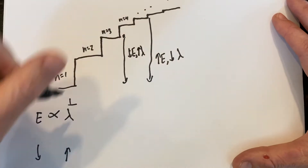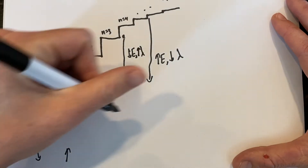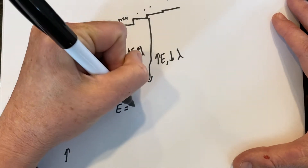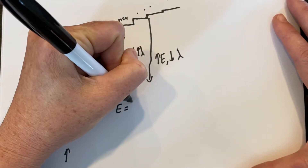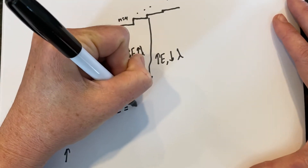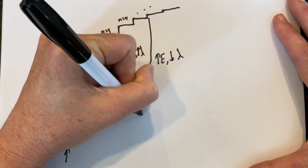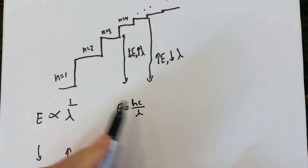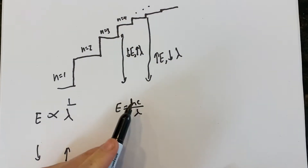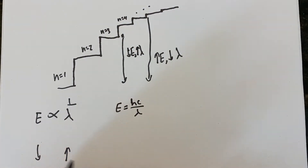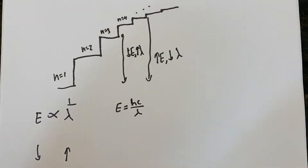The equation I use is E equals hc over lambda. So this is the proportionality right here. The main thing is: if energy goes down, wavelength goes up, and vice versa.